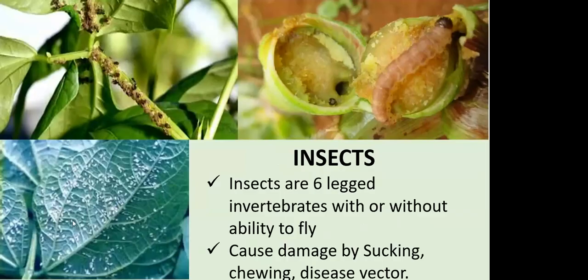Another category of pests is insects. In normal language, when you talk of pests, we associate the insect type. But from a broader view, a pest is any organism. Insects are the most common and most relatable by most farmers. These are six-legged invertebrates, with or without the ability to fly. Some have the ability to fly long distances — for example, the tuta absoluta, which can fly several kilometers overnight if the currents and winds are favorable.